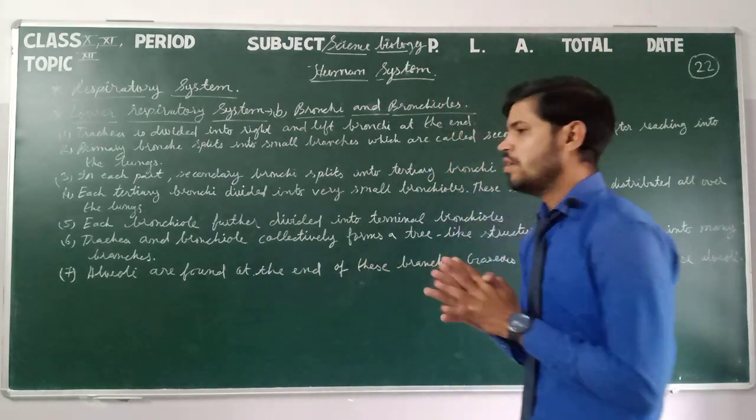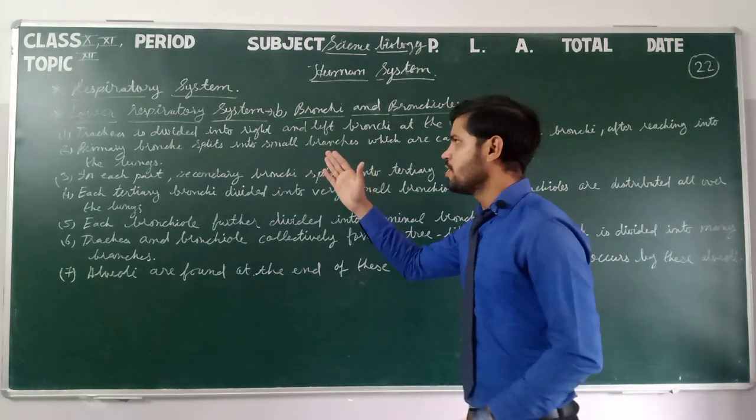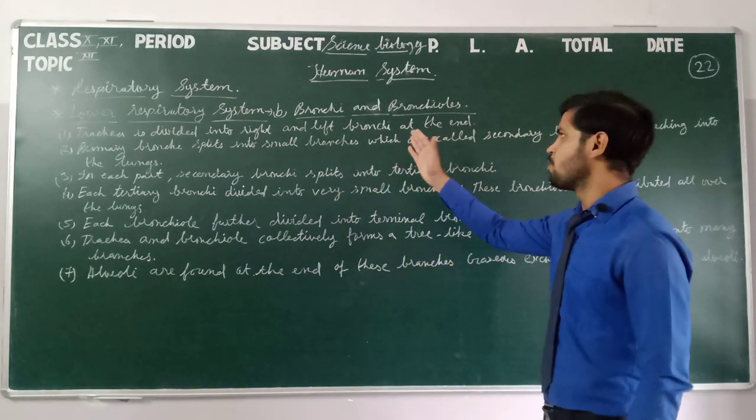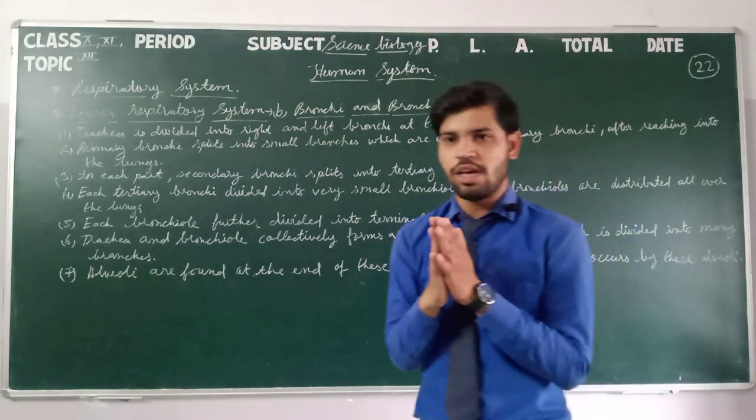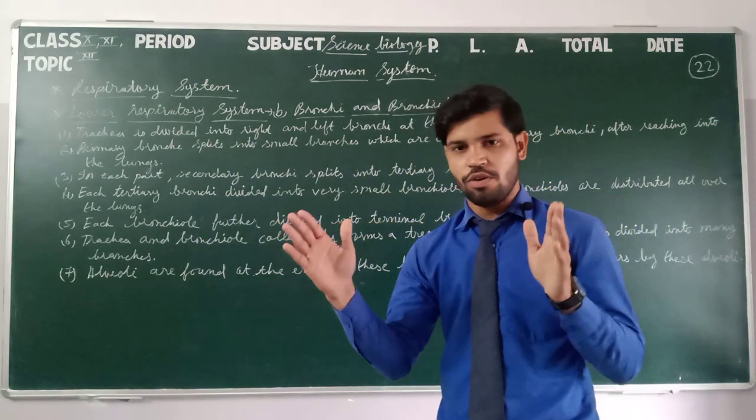The first point of bronchia and bronchioles is that the trachea is divided into right and left bronchi at the end. The trachea splits into two parts. Right and left.